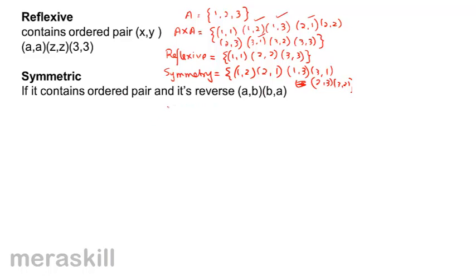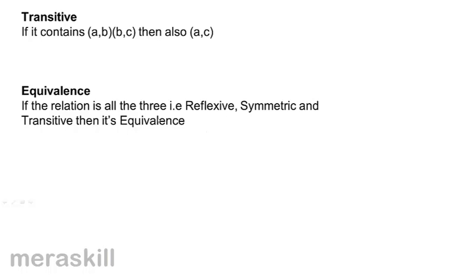You also have a transitive relationship. For example, if you have (1,2) and (2,3), then you also have (1,3) — that's transitivity. If 2 is the image of 1 and 3 is the image of 2, then 3 is the image of 1. That is, if you have (a,b) and (b,c), then you also have (a,c). Equivalence occurs when a relation is all three: reflexive, symmetric, and transitive.